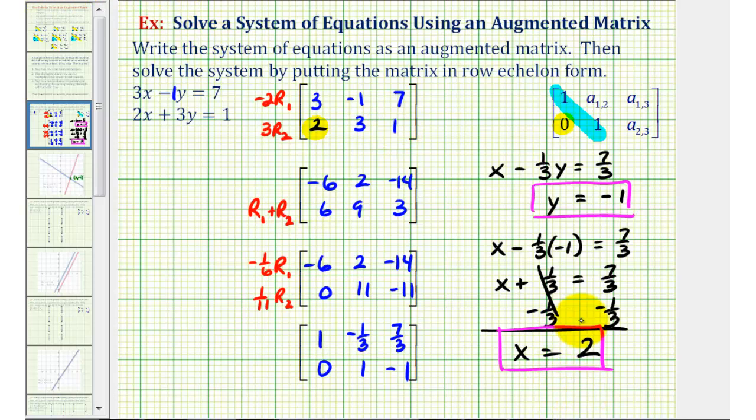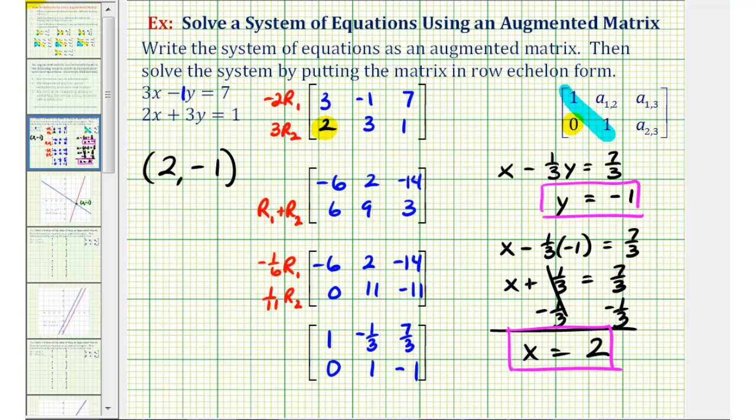Let's go ahead and write this as an ordered pair, where the x-coordinate would be two and the y-coordinate would be negative one. If we wanted to verify this solution, we can graph the two lines on the coordinate plane to make sure the two lines do intersect in this point. Let's go ahead and do that.